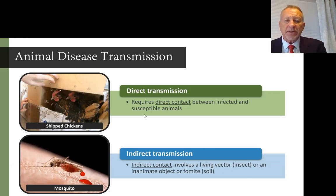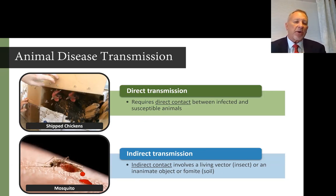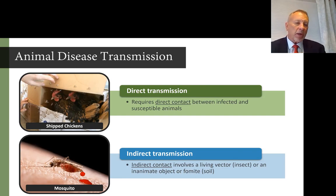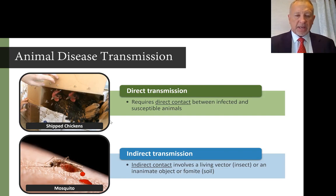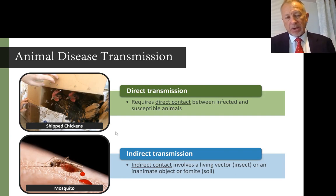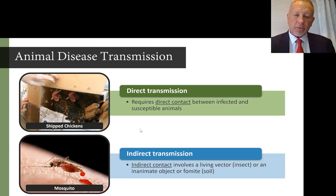There's indirect transmission and direct transmission. These terms just reinforce the idea that you don't actually have to touch a sick animal to get the disease — you can come in contact with their crates, bedding, or manure. When it comes to indirect transmission, we're talking about the doorknob, which is a fomite, dirty boots, or vectors such as mosquitoes or ticks.